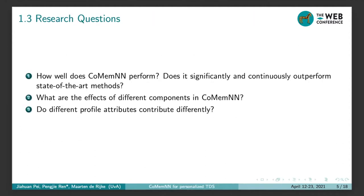We are focusing on three research questions. First, how well does CoMemNet perform? Does it significantly and consistently outperform the state-of-the-art models? Second, what are the effects of the components in CoMemNet? And third, do different user profile attributes contribute differently?